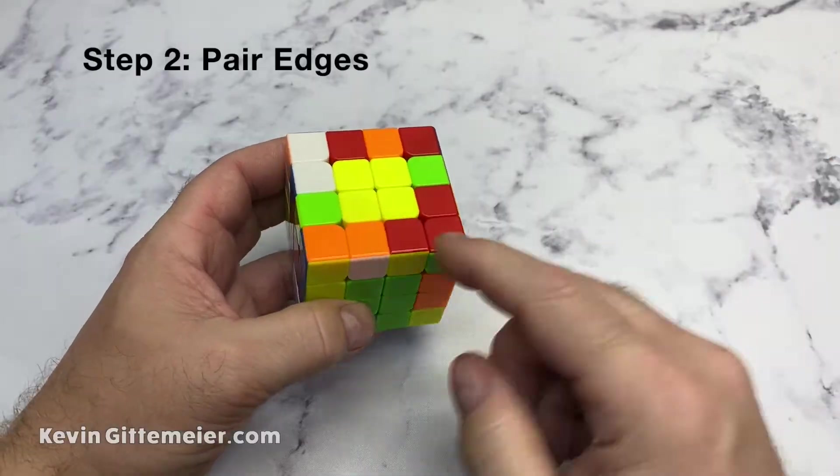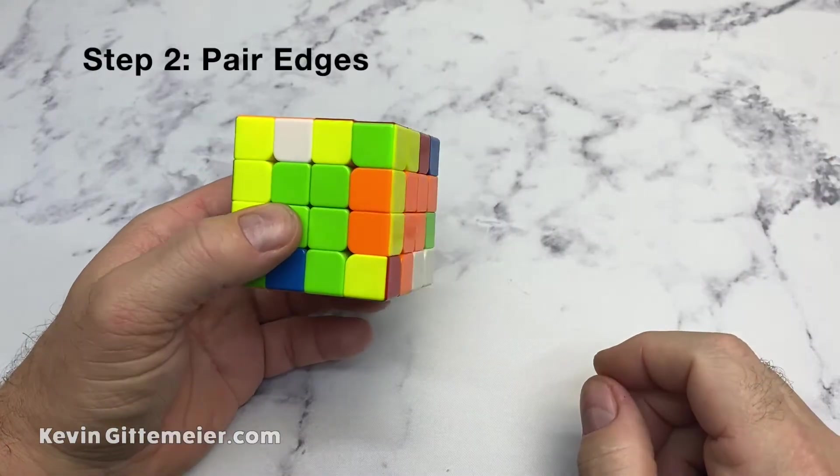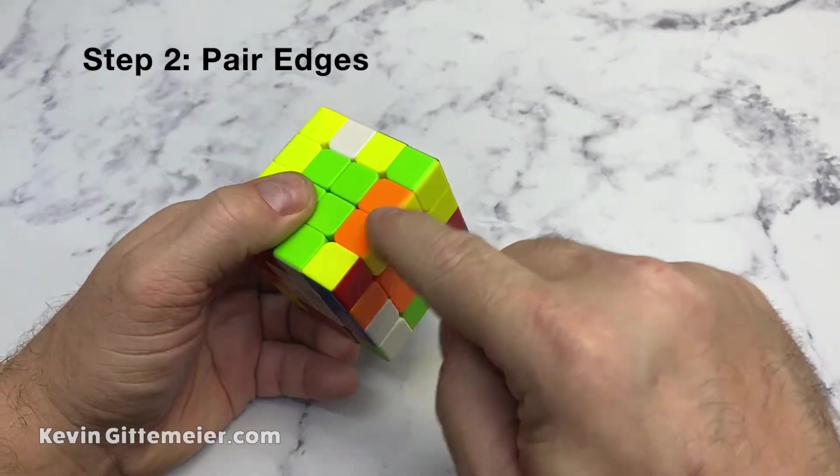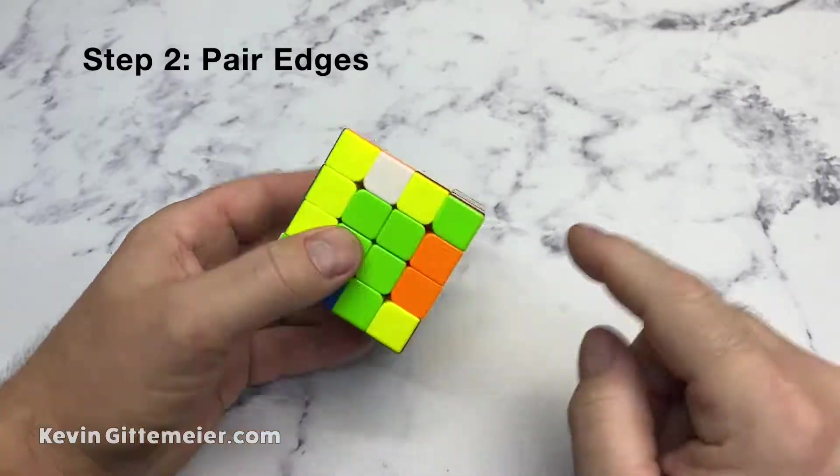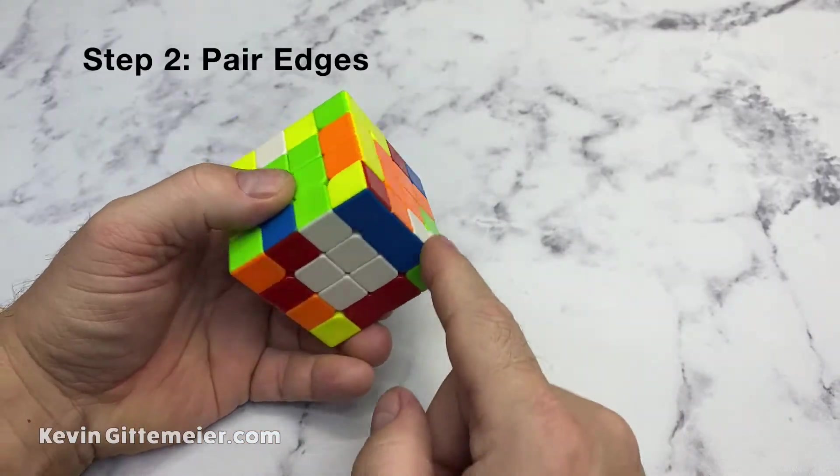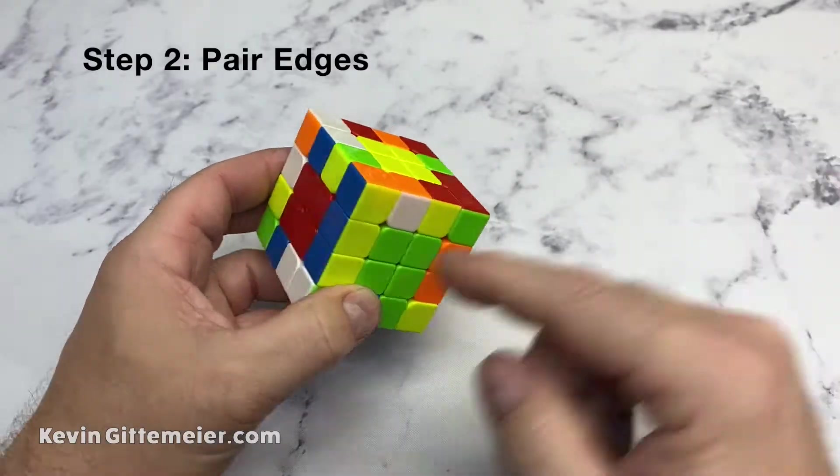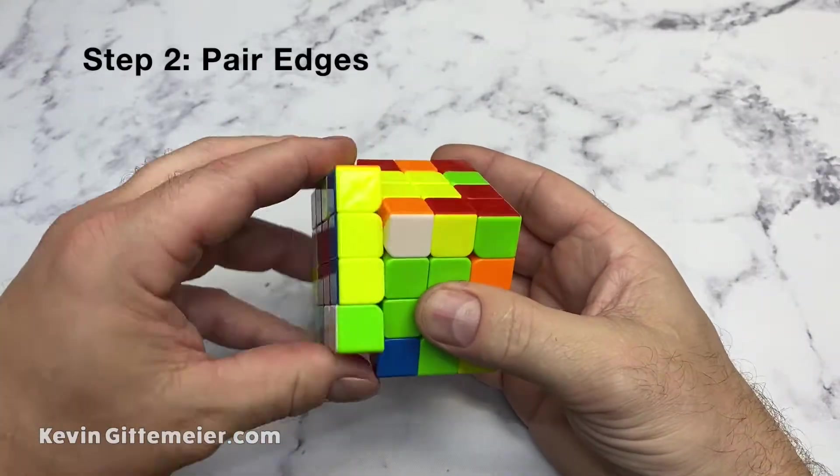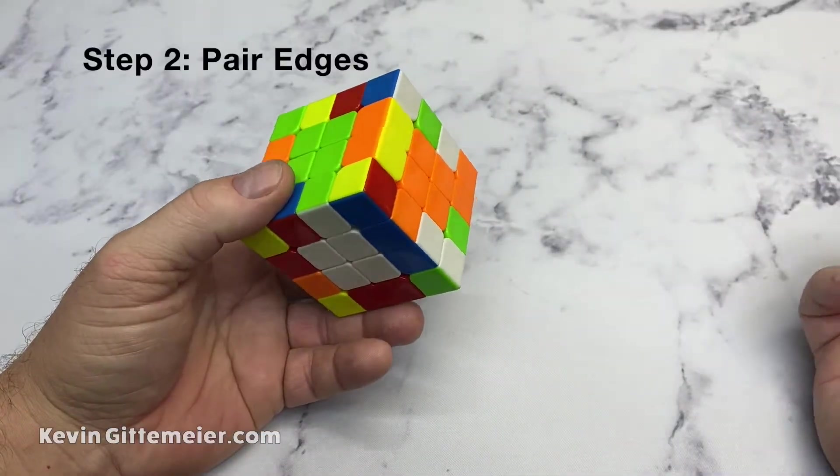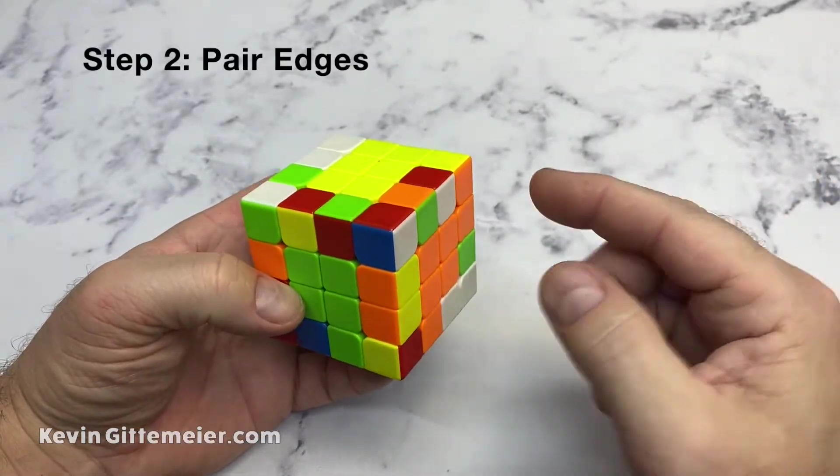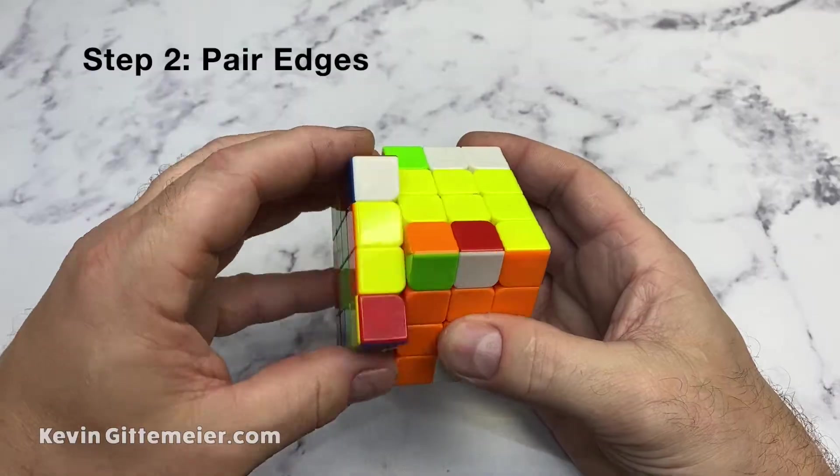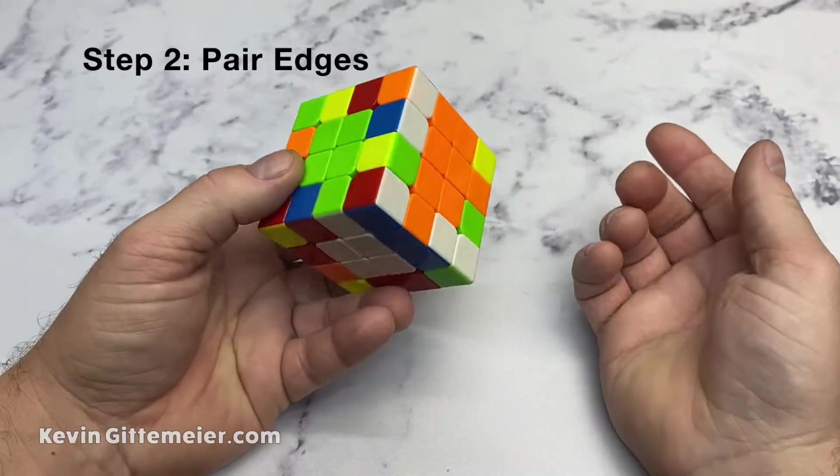Now what I want to do is start pairing these edge pieces together like this one. So I got lucky in that one solved, and that one. But I want to pair them together. I'm going to start with my white, then do yellow, then do the middle colors. If I happen to see one solved, I'll preserve it and just store it on the top for now. But yeah, I got real lucky. I've got two.